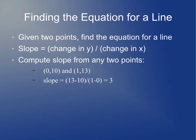So if you need to find an equation for the line, the first thing you can do is calculate the slope. The formula for slope is rise over run — the change in y divided by the change in x. You choose any two points from the line, take the change in y (13 minus 10) and the change in x (1 minus 0), and you get 3 for the slope.